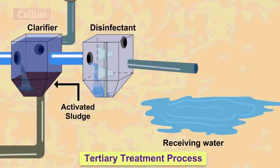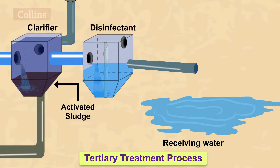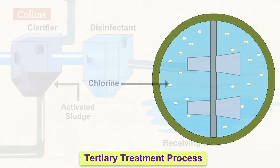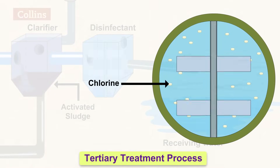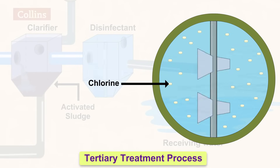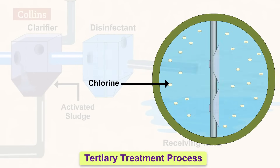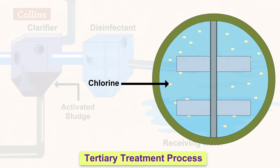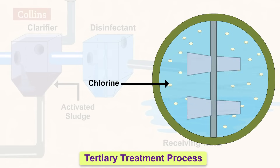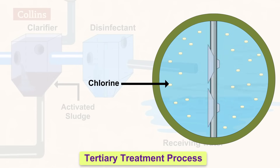In the tertiary treatment process, the leftover wastewater is treated with chlorine to remove the phosphorus compounds, nitrogen compounds and bacteria. It is a chemical process. Chlorine tablets are added to kill the germs. This process is called chlorination.